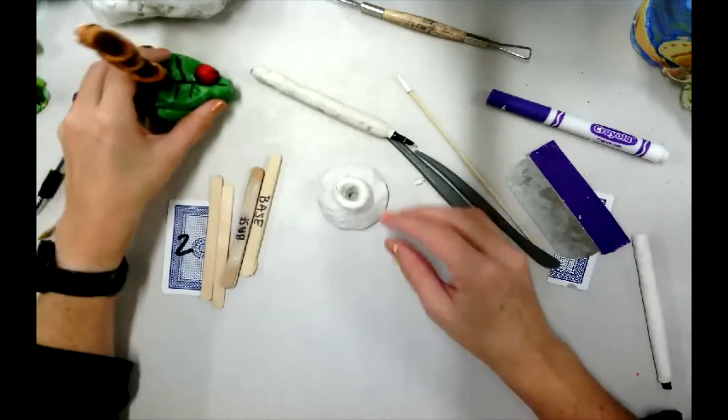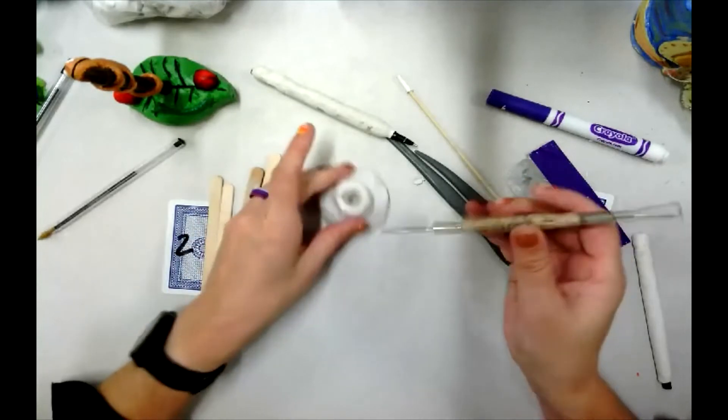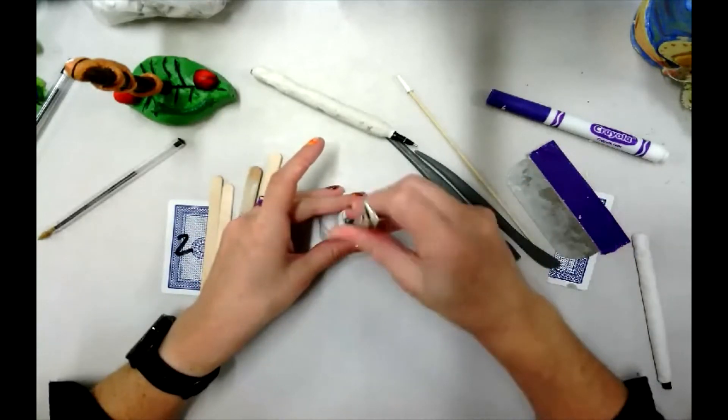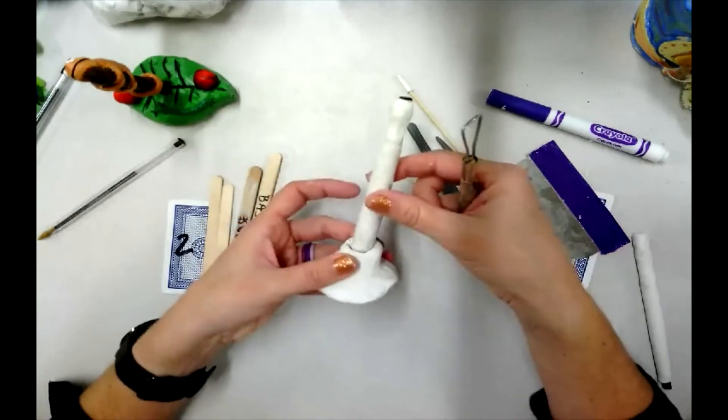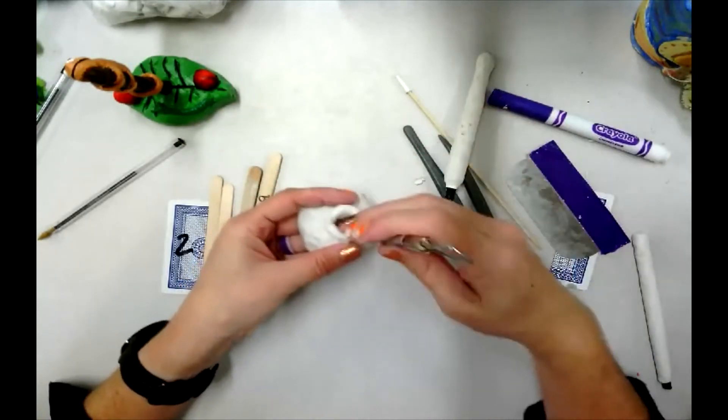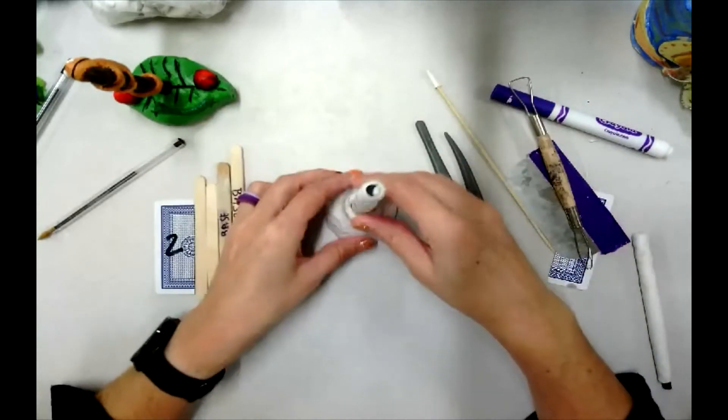Another thing that I did find helpful was this loop tool. I didn't have enough for every kid, so before I would bake their clay, I made them test their pen. If the pen didn't sit in deep enough, I would take this loop tool and just twist it to open up that hole a little bit bigger.